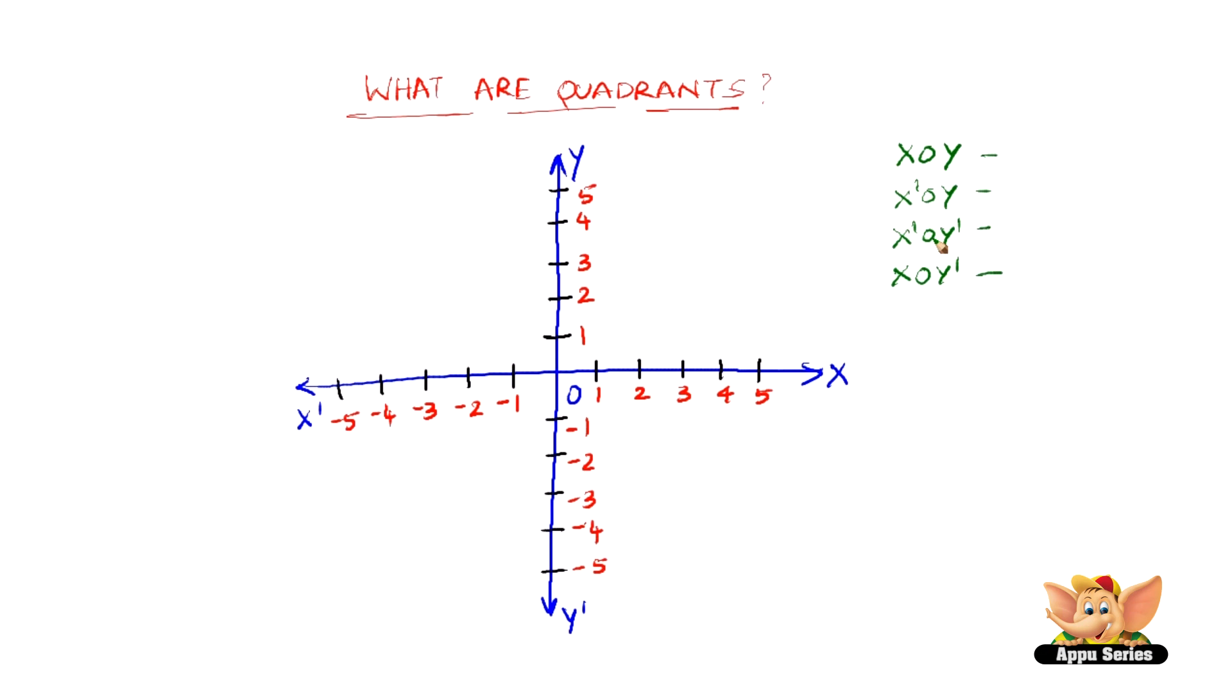Now these are also numbered accordingly, such as this is the first quadrant, this is the second quadrant, this is the third quadrant, and this is the fourth quadrant.